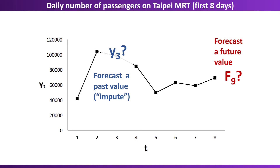Sometimes we use the term 'impute' when we're talking about forecasting a past value. Forecasting methods that focus on the future will not use data farther into the future, but if we're trying to impute a past value, it is legal to use later data.